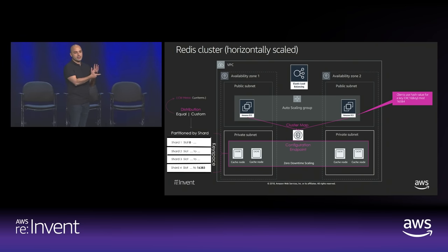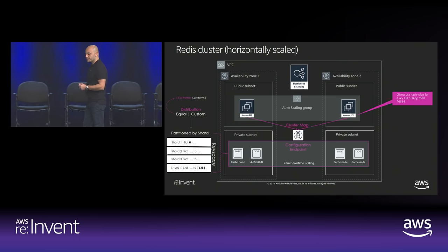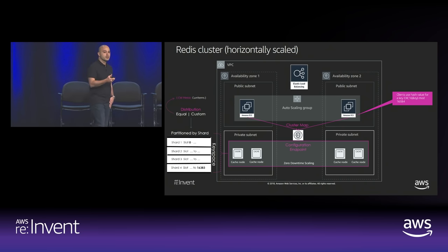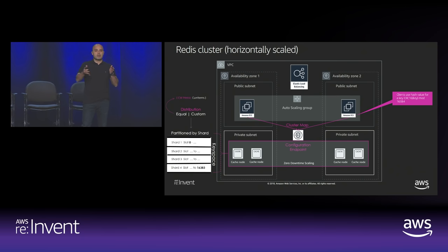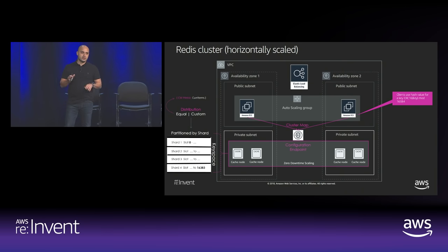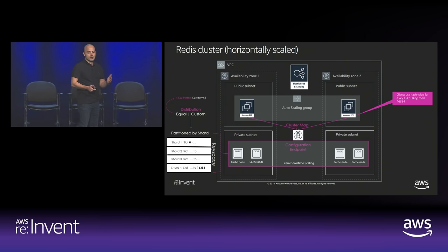Some clients also frequently ping Redis in the background. When you build a cluster-mode-enabled cluster, you decide how many shards you want — how many partitions of your data. By default, hash slot ranges are equally distributed across the cluster, but you can also do a custom distribution if you want to isolate specific keys onto a particular shard. You can check the current items in each shard using the CloudWatch metrics we expose.